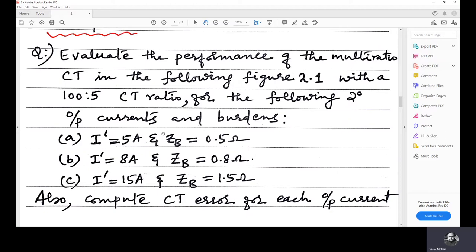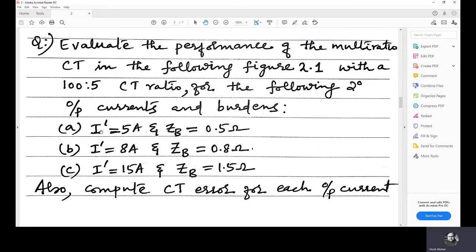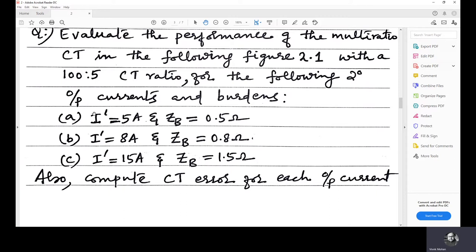Three cases are shown here. In the first case, I dash equals 5 amps and ZB equals 0.5 ohms. That is, I dash is the current that is seen by the relay, which is 5 amps, and ZB is the impedance of the instrument. It can be the relay, so there is a burden which is 0.5 ohms. Now, three values are given. I dash equals 8 and ZB equals 0.8. I dash equals 15 and ZB equals 1.5. So, we are asked to compute the CT error for each output current I dash as well as we are asked to evaluate the performance of the multiratio CT.